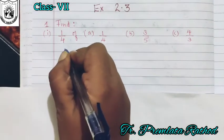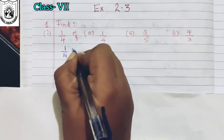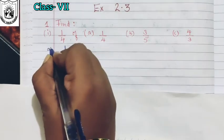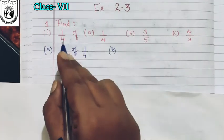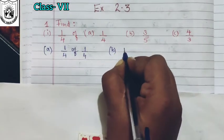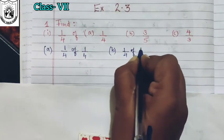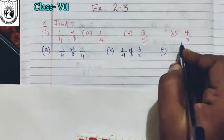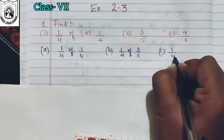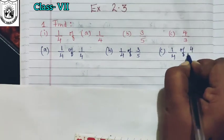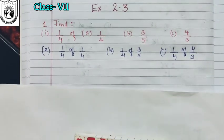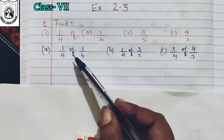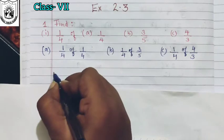So we have to first find one-fourth of the first question, that is one-fourth — this will be part A. And part B: find one-fourth of the second one, that is three-fifth. And in C, find one-fourth of the number four upon three. Earlier we have learned that 'of' means it will be multiplied. So let us multiply now.